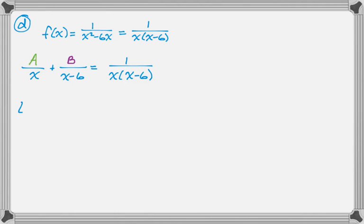I like to use a cover-up method. So if I let x equal 0, that's going to tell me that A is negative 1/6. So what I do is I cover up the x in the denominator on the right-hand side and I plug in 0. And it tells me that A is equal to negative 1/6.